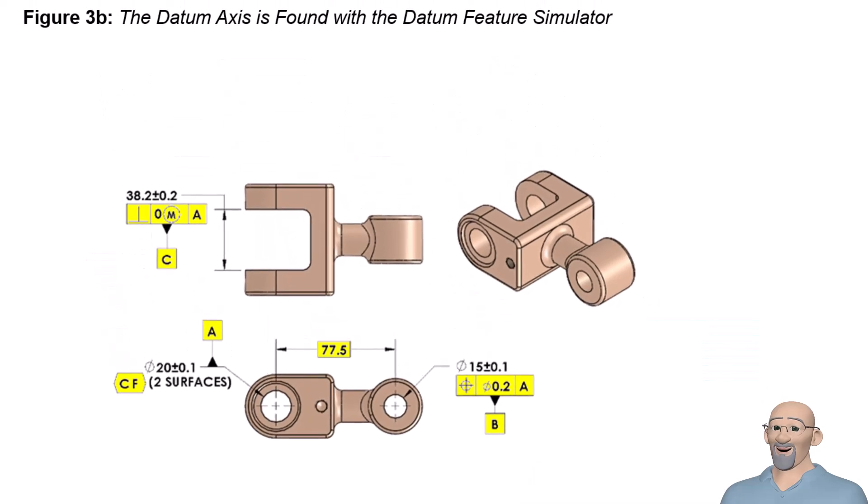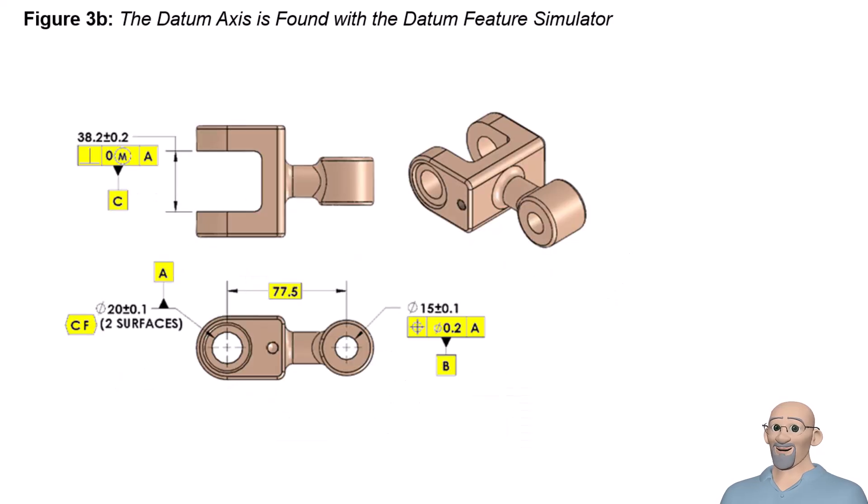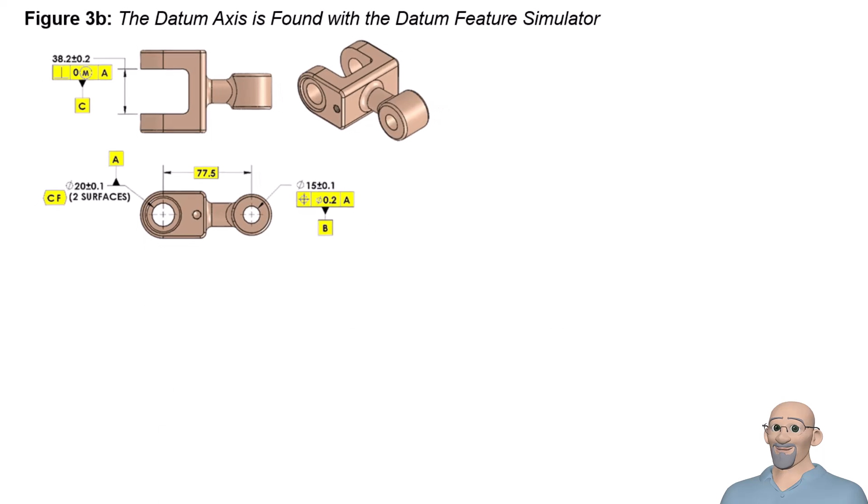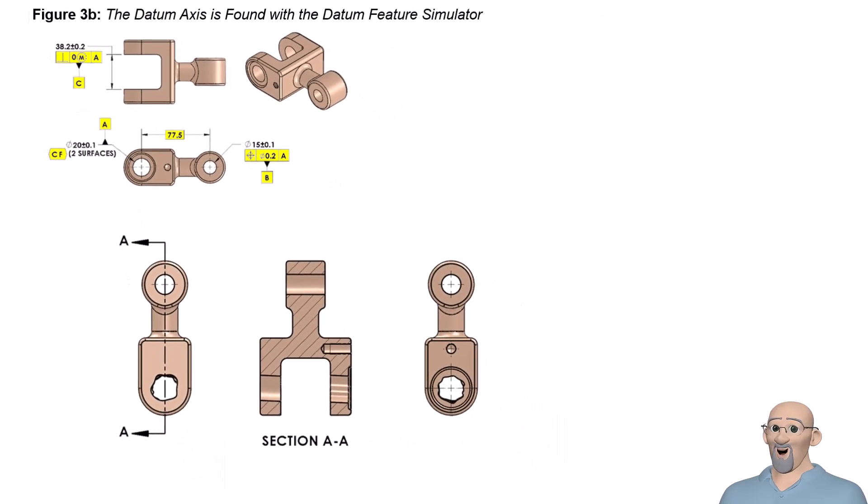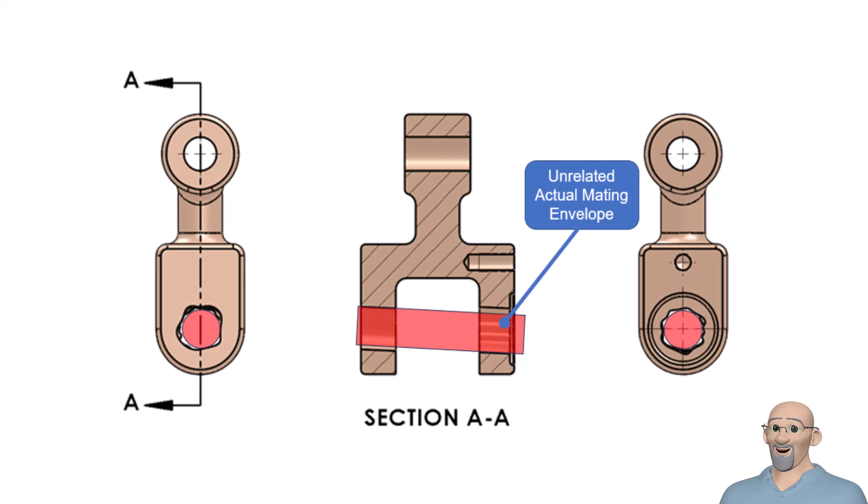Notice that in this case, datum feature A is referenced at regardless of material boundary or RMB. This means the datum feature simulator will be the unrelated actual mating envelope or UAME of the pattern of two holes. The UAME can be found by using a gauge pin or by measuring a sufficient number of points within the two holes, then fitting a maximum inscribed cylinder to the measured points. The axis of that cylinder is datum axis A.